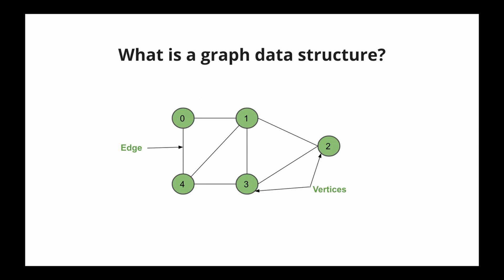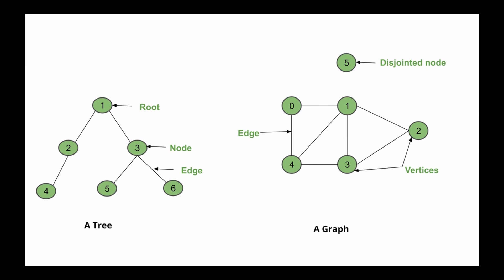What exactly is a graph data structure? A graph is a non-linear data structure consisting of nodes and edges. A tree is a special type of graph, so all trees are graphs but not all graphs are trees. Let's compare the two. Graphs have nodes which can be connected together, and there can be multiple paths between these connected nodes.